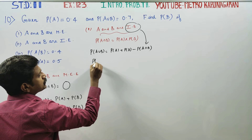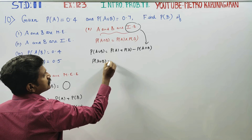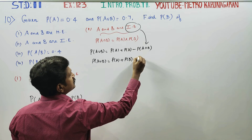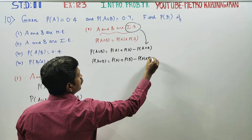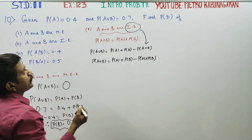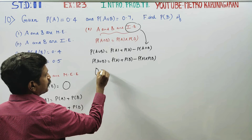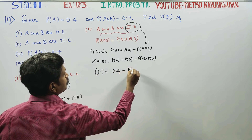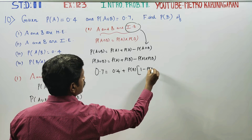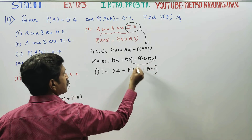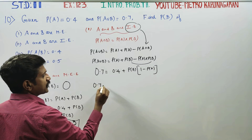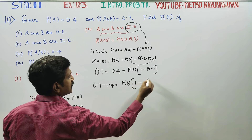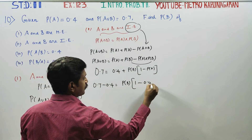For independent events, P(A∪B) = P(A) + P(B) − P(A) × P(B). Substituting: 0.7 = 0.4 + P(B) − P(A) × P(B). Taking P(B) as common on the right side: 0.7 = 0.4 + P(B) × (1 − 0.4). So 0.7 − 0.4 = P(B) × 0.6.